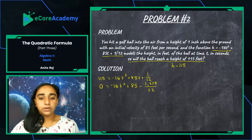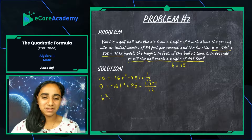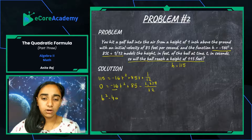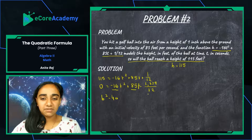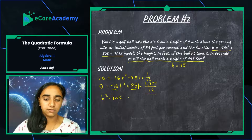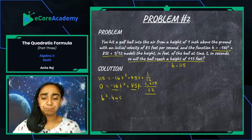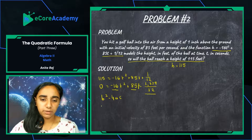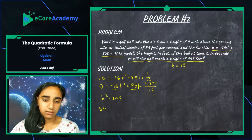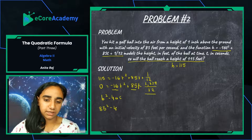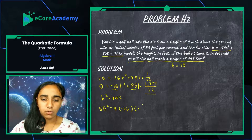Now we use the discriminant: b squared minus 4ac. Our a value is negative 16, our b value is 85, and our c value is negative 1379 over 12. We calculate: 85 squared minus 4 times negative 16 times negative 1379 over 12. 85 squared equals 7225.